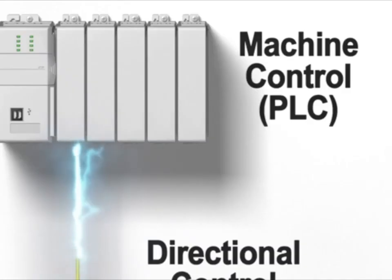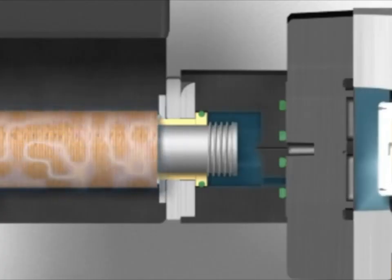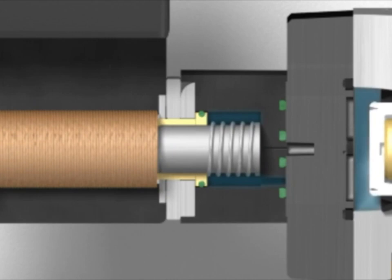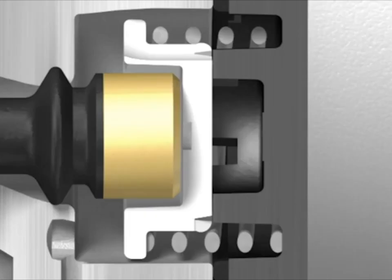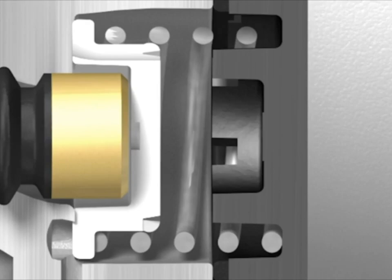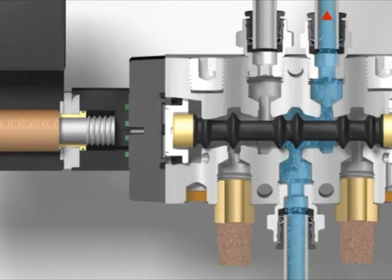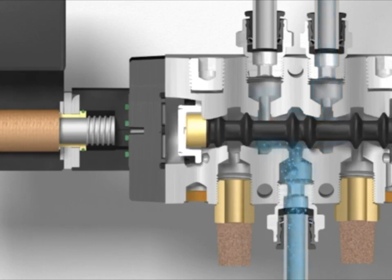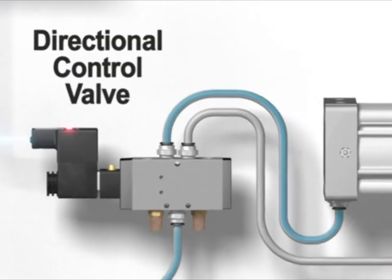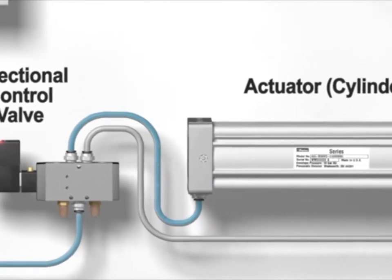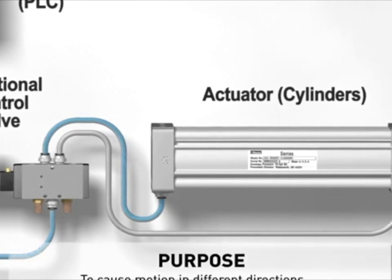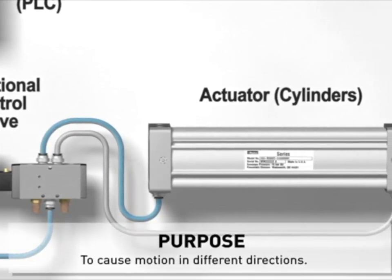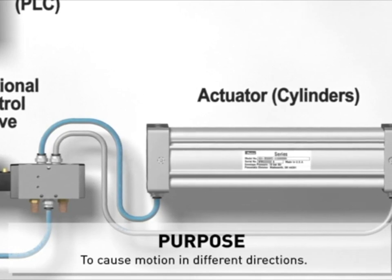When the signal from the PLC is removed, the electromagnetic force is removed, and the spring on the plunger returns it to its normal state, removing the air signal pushing on the spool. The spring on the opposite end returns the spool to its default position, directing air back out working port two. The PLC can now direct air to whichever port is needed, whenever it is needed. The next component — the actuator — will allow us to do useful work with the air we compressed, cleaned, and redirected.